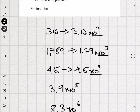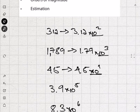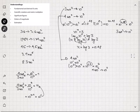You'd be forgiven for thinking that 1.79 times 10 to the 3 is closer to 10 to the 3, that 4.5 times 10 to the 1 is closer to 10 to the 1 than 10 to the 2, and that 3.9 times 10 to the 5 is closer to 10 to the 5 than 10 to the 6. But in fact, 4.5 and 3.9 are closer to the next order of magnitude than the one they're written in. I'll show you why.